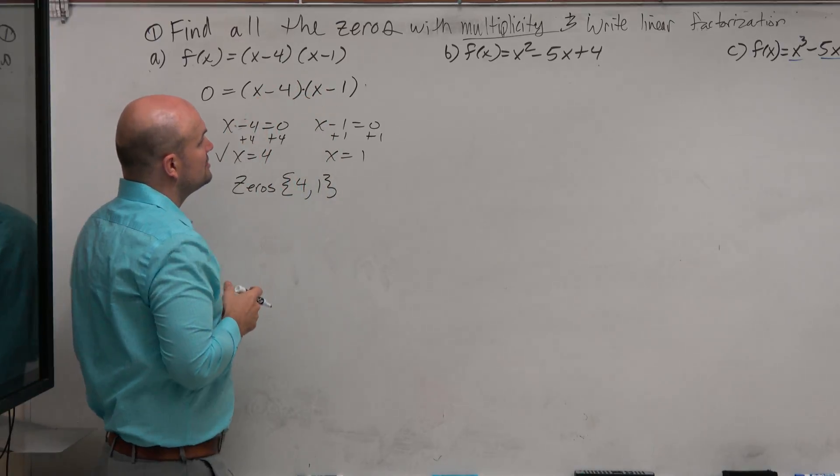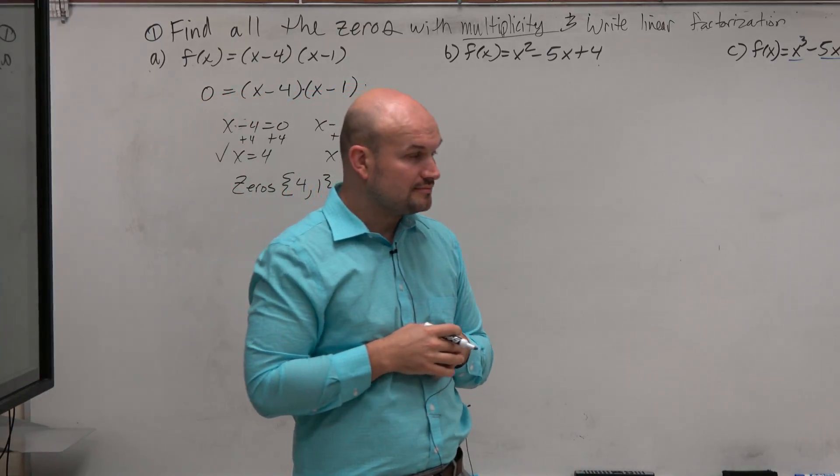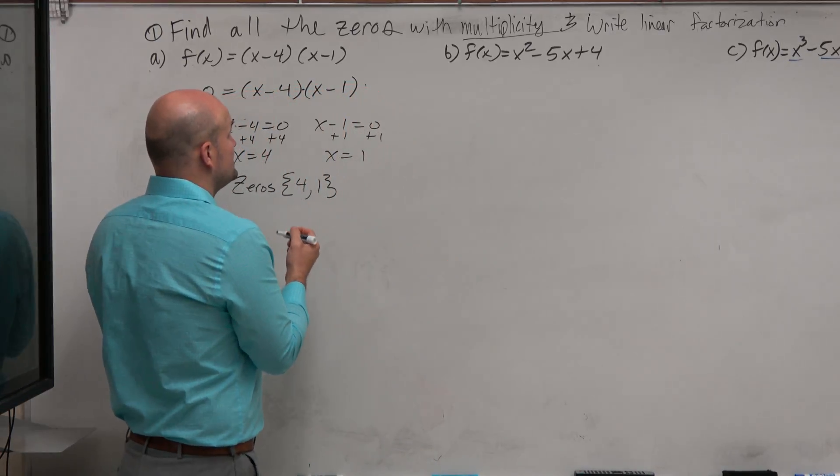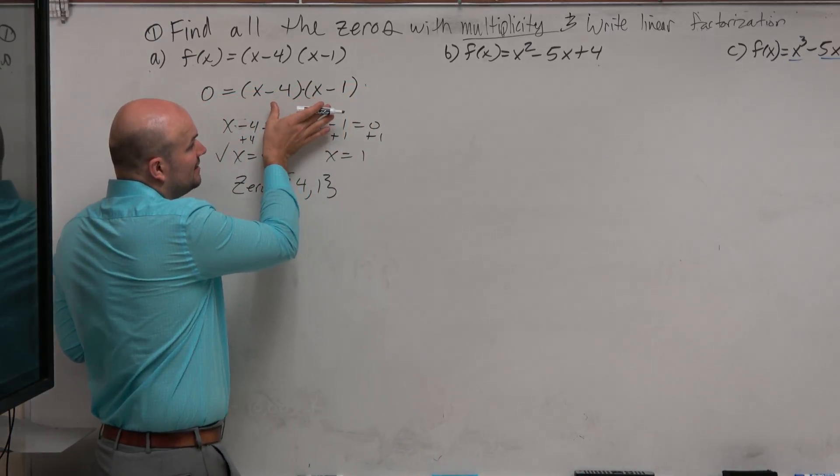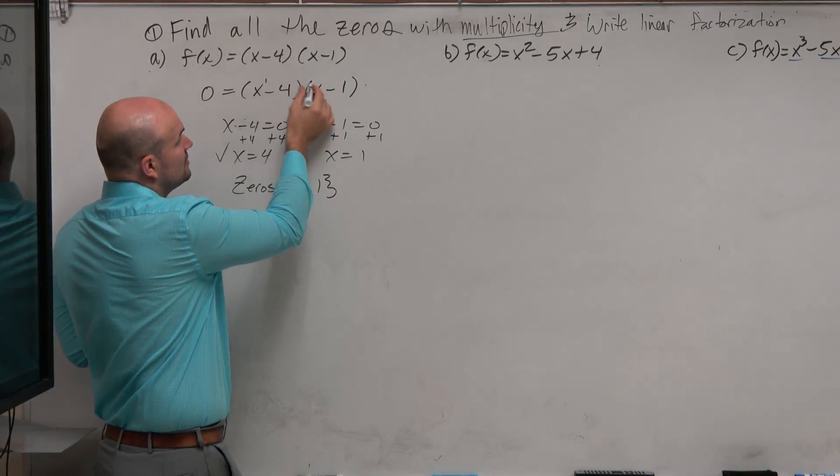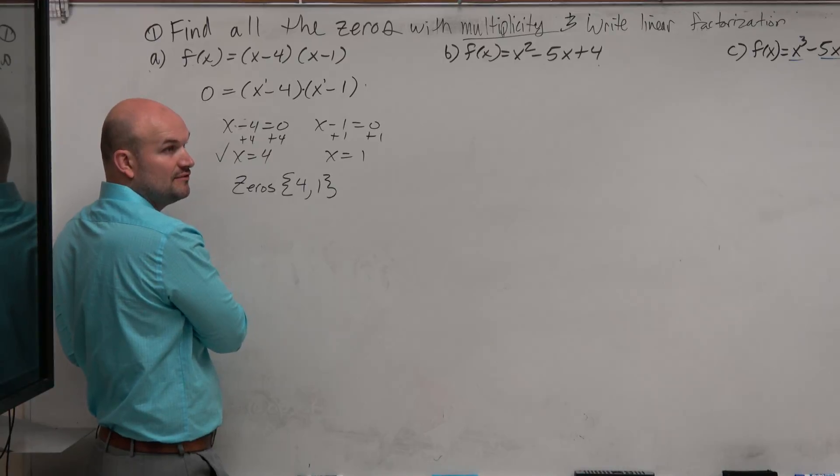I also asked you to look at the multiplicity. So the multiplicity, that's where it comes into having the linear factorization written down. And the linear factorization is basically a polynomial written as a product of its linear factors. And you can see these are linear factors, because x is raised to the first power.